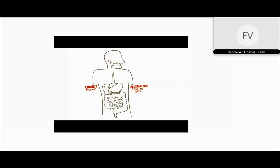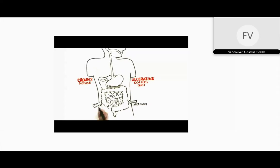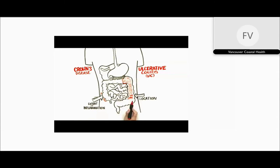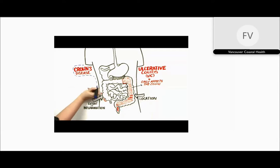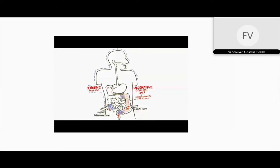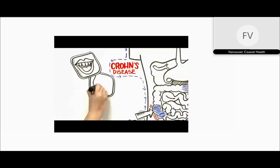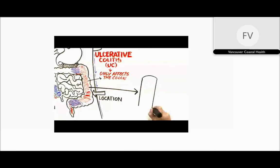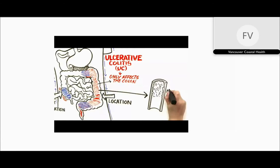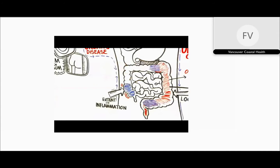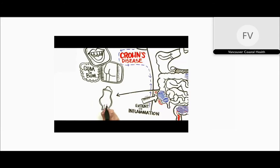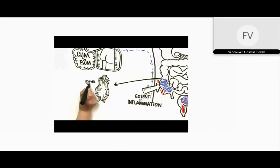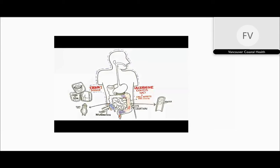One is called Crohn's disease, and the other is called ulcerative colitis, or UC. The key differences are firstly the location of the inflammation, and secondly the extent of the inflammation. Ulcerative colitis only affects the colon or large intestine, while Crohn's disease can affect the entire digestive system, from the mouth to the anus — or as we say, from gum to bum.